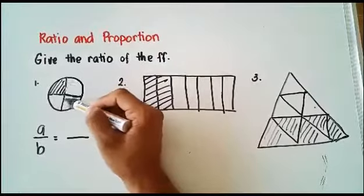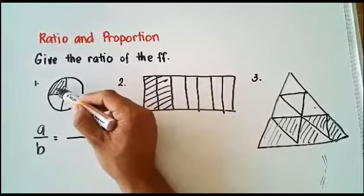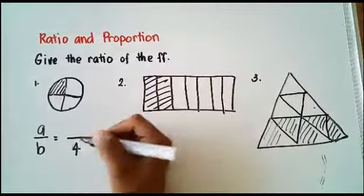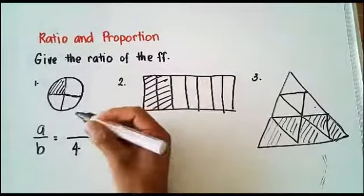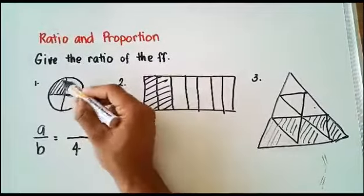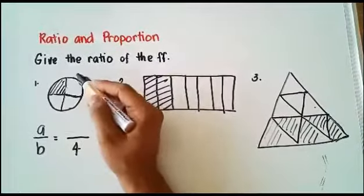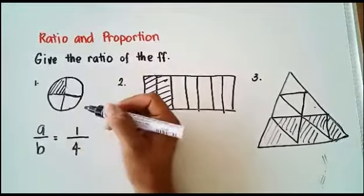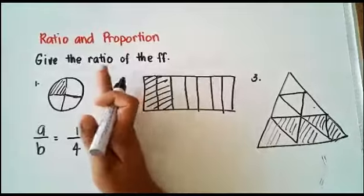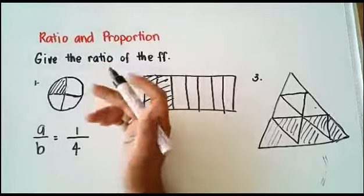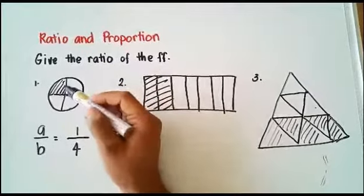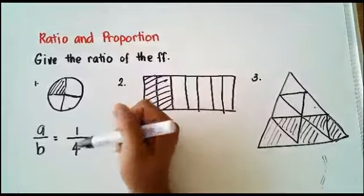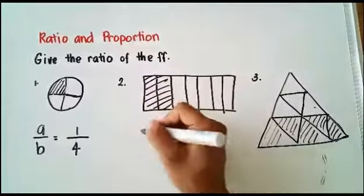We have 1, 2, 3, 4 parts — that is 4, which is our denominator. And the shaded parts — that is our numerator — we count: 1. So for number 1, our ratio is 1 to 4. For letter B, A over B equals...